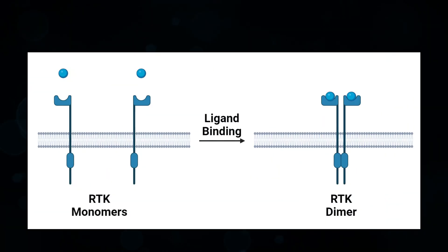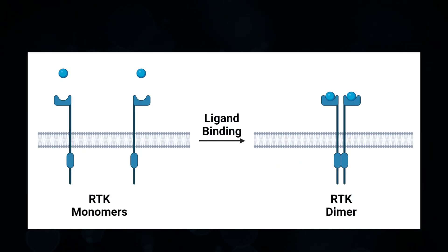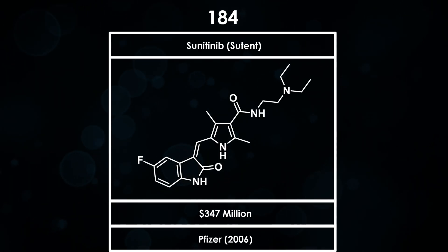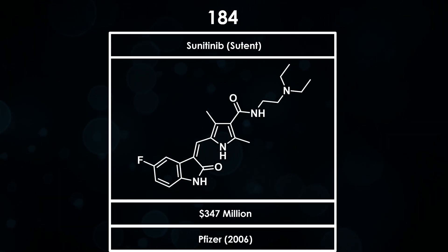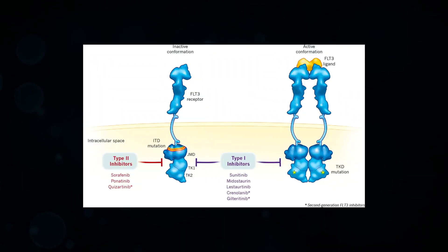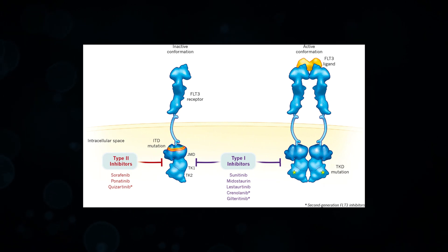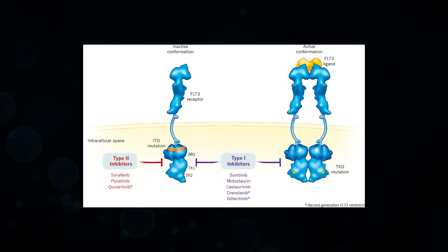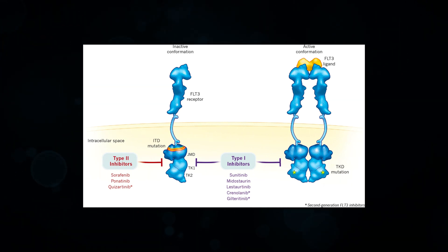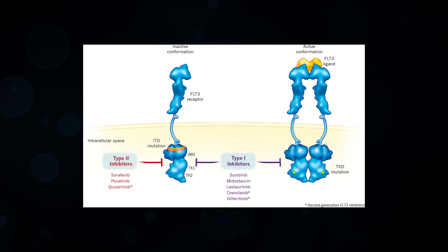Gilteritinib works by inhibiting receptor tyrosine kinases, like sunitinib, which we saw in the previous episode. In this case, gilteritinib targets primarily FLT3 and AXL receptor tyrosine kinases, but does also target some others.